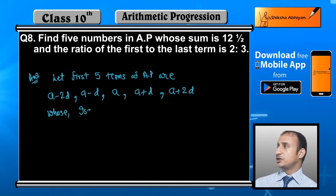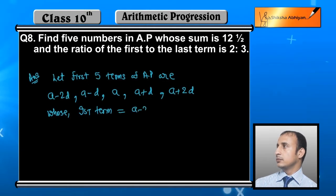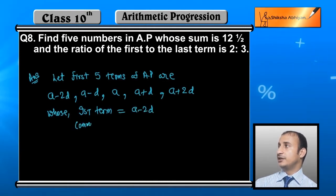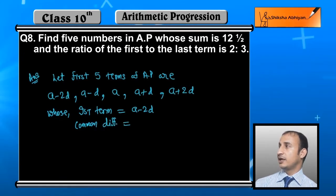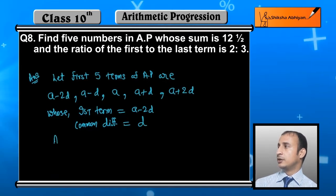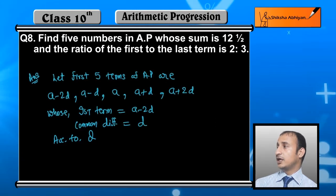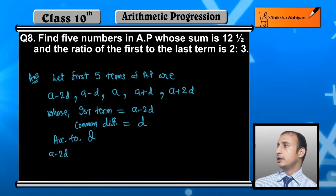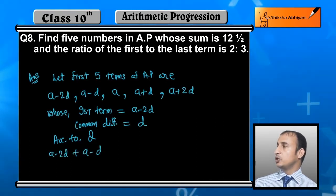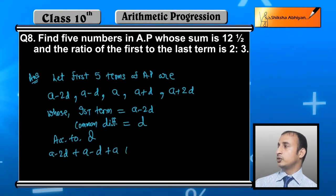Now, first term कितनी है: a minus 2d। And common difference d है — देखिए a minus 2d में d add कराएंगे तो a minus d, फिर d add कराएंगे तो a, फिर a plus d, so on। Now according to the question, इन सब का sum 12 and a half होगा।